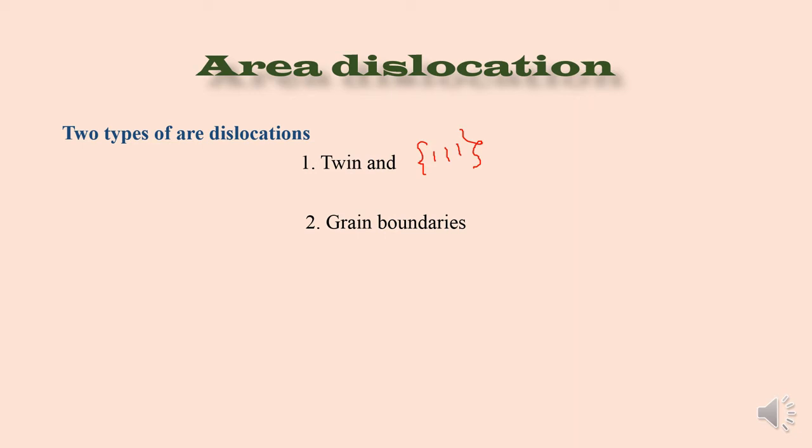What is polycrystalline material? Polycrystalline material is comprised of many small crystallites with different crystal orientations that are separated by grain boundaries.